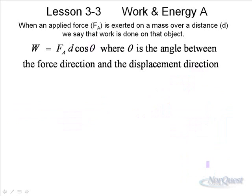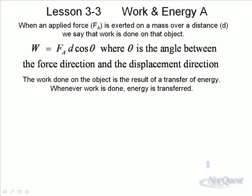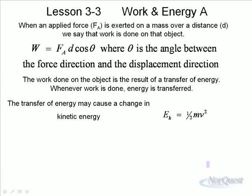The work done on the object is the result of a transfer of energy. Whenever work is done, energy is transferred. One type of energy is kinetic energy. Kinetic energy is the energy of motion. The formula for kinetic energy is one half mv squared, with mass and the speed of the object giving it its kinetic energy.